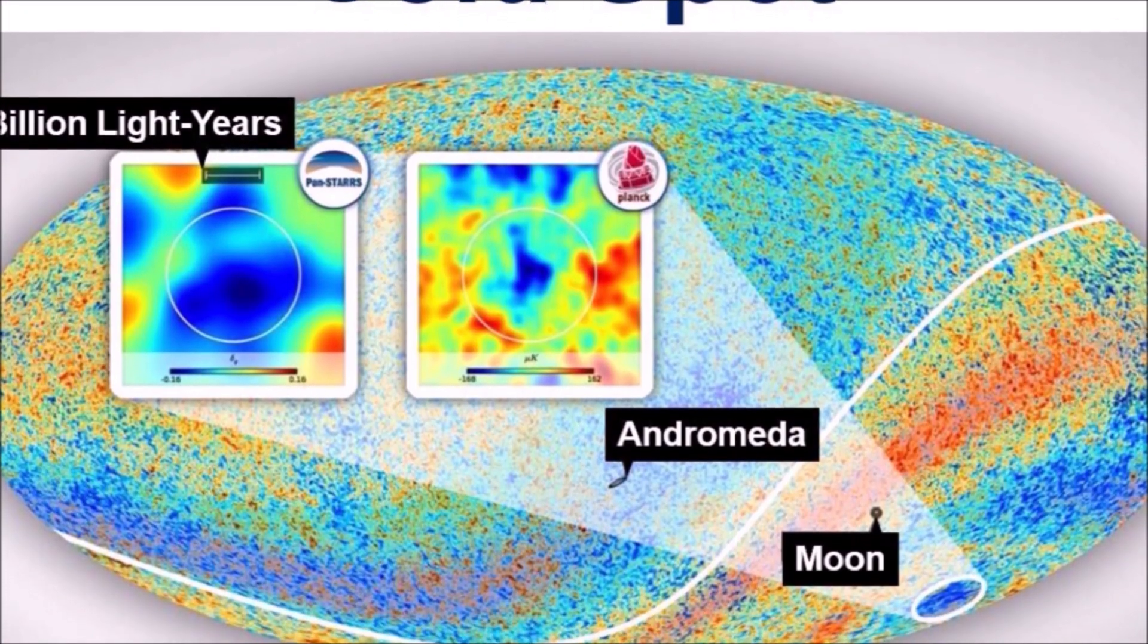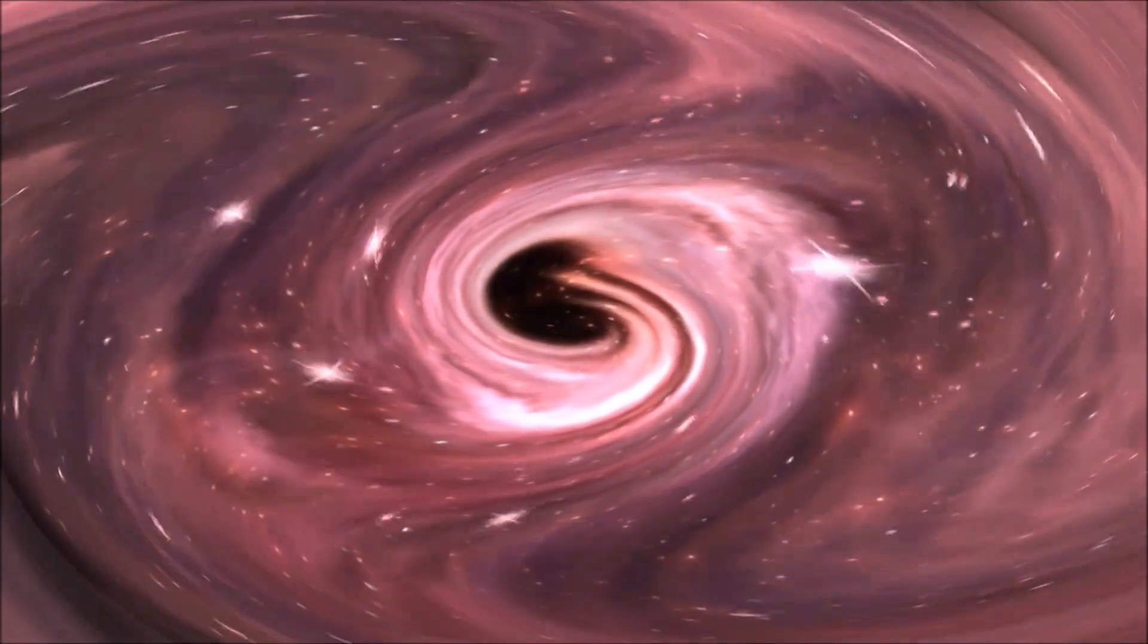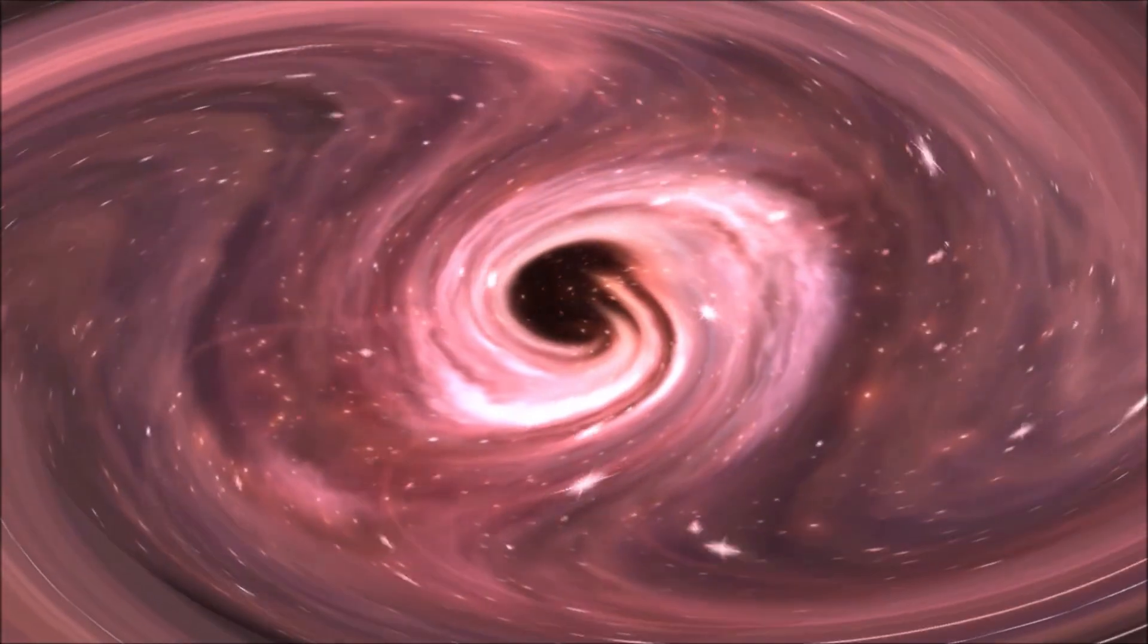The cold spot is an unusually cool patch of space seen in the radiation produced by the formation of the universe more than 13 billion years ago.